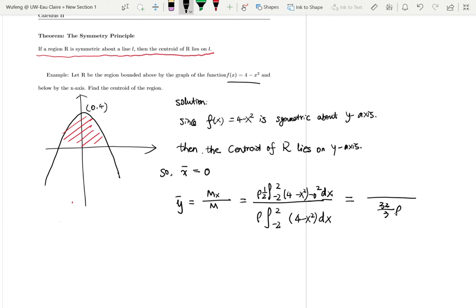And then the top, it gives you 256 over 15 rho. So it gives you the center of mass, which is 8 over 5. So now the centroid of the mass region is (0, 8/5).